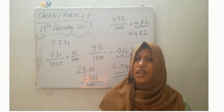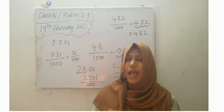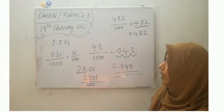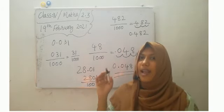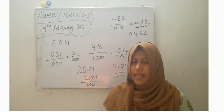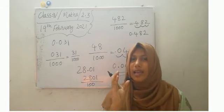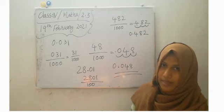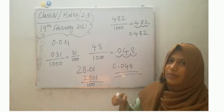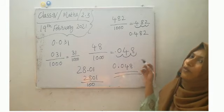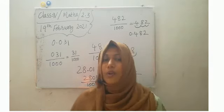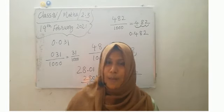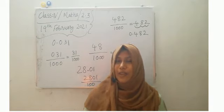So students, decimals and fraction conversion — is it so simple? Always have in your mind the concept of decimal: decimal means fraction with denominator ten, hundred and thousand. The very important thing is, always count the number of zeros in the denominator to put the decimal point. Number of zeros means number of place values after decimal. So students, do your exercise work yourself so that you can be thorough with this topic, and we will discuss more at the time of your TCS. Thank you.